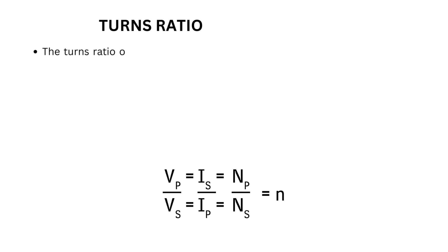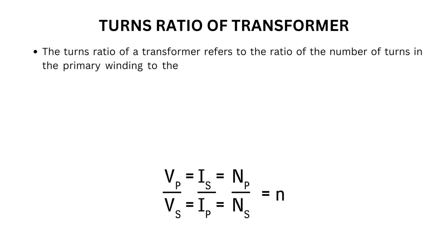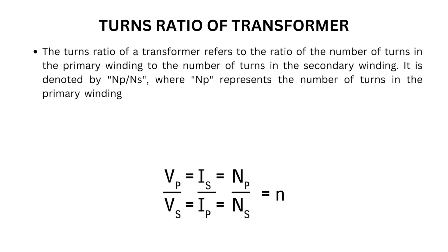The turns ratio of a transformer refers to the ratio of the number of turns in the primary winding to the number of turns in the secondary winding. It is denoted by Np divided by Ns, where Np represents the number of turns in the primary winding, and Ns represents the number of turns in the secondary winding. The turns ratio determines the voltage transformation of the transformer.